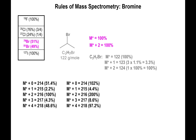To work with this, normalize by converting M+ to 100% — roughly multiply everything by two. So M+ becomes ~100%, M+1 becomes 4.4%, and M+2 becomes 200%. Dividing M+1 by 1.1 gives 4 carbons, totaling 48 g/mol. Subtracting from 214 leaves 166, meaning there are significant atoms aside from hydrogen still unaccounted for.